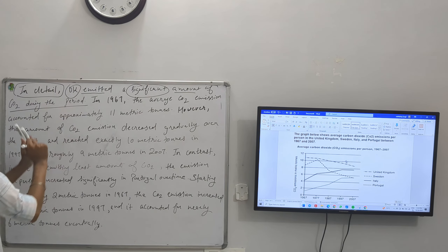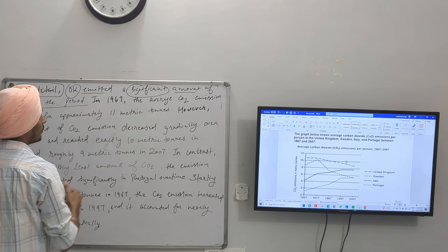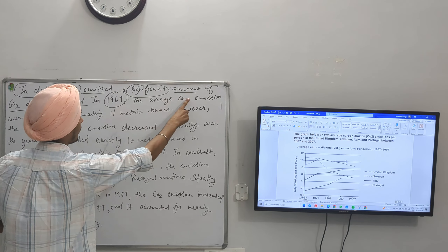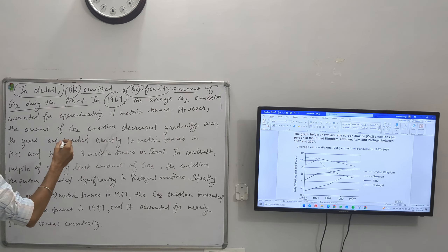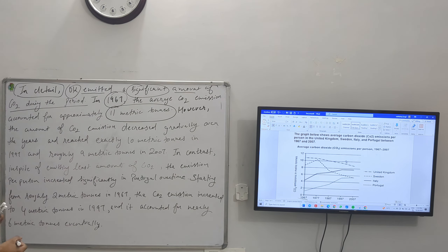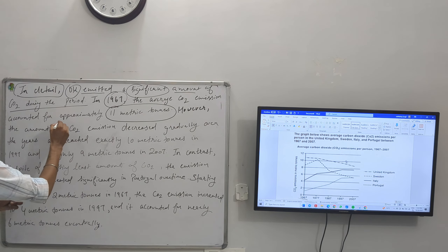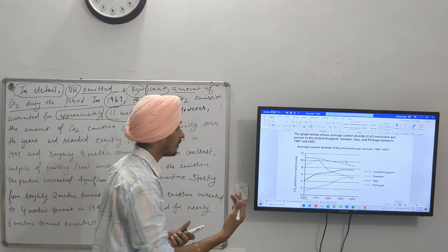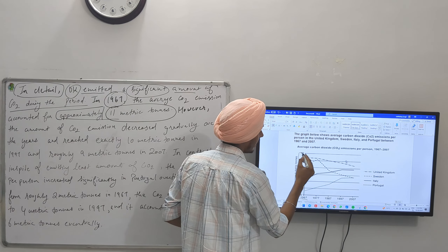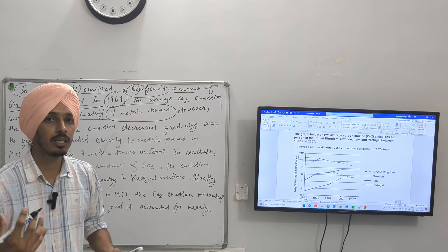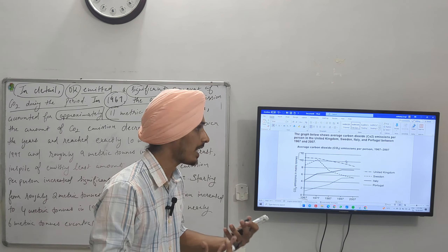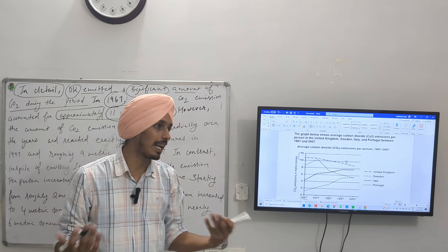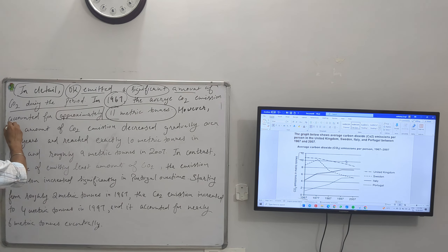I have used 'approximately' because I do not have the exact amount — if we see the chart, UK is between 10 and 12, so we cannot say exactly 11 but it is approximately 11. 'Accounted for' means 'it was.' However — used to compare — the amount of CO2 emission decreased gradually over the years and reached exactly 10 metric tons in 1997. 'Gradually' is used when the change is medium — between slight and significant.